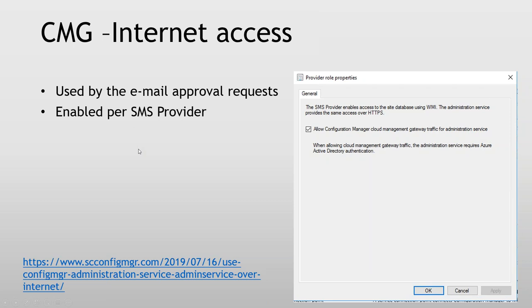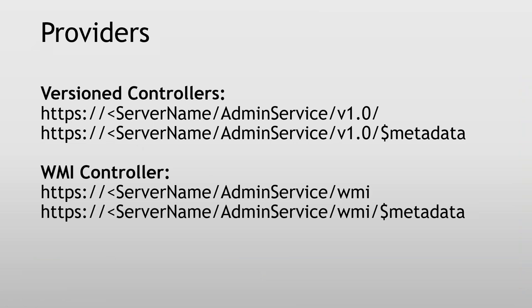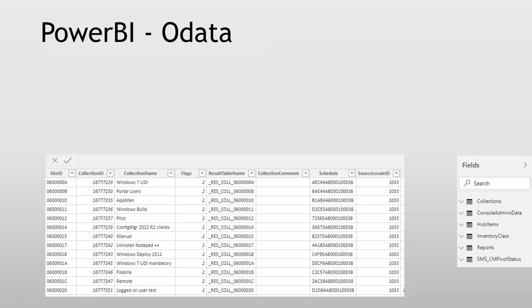I think the administration service is really cool. We have two different providers we can access: either the version controller or the WMI controller. There's a bit of difference between them in what they actually show and what we can access. The WMI controller lets us reach all the legacy stuff as well — almost all WMI. If we access it through Power BI, we can just say 'access OData feed' and it will just spin up and do it for us.